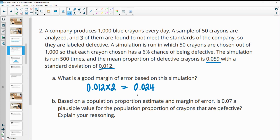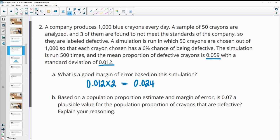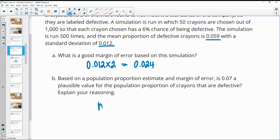Based on the population proportion estimated margin of error is 0.07, a plausible value for the population proportion of crayons that are defective, explain your reasoning. So if our mean is at 0.059 and our margin of error is this, we should be able to add 0.024 to get a top end of our interval of 0.083 and then we should be able to subtract 0.024 and get a bottom end of our interval of 0.035.